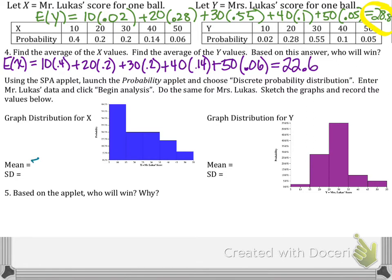So we already calculated the mean to be the expected value of 22.6 for Mr. Lucas' graph. And the standard deviation is going to be calculated either using technology or using a calculator, which we'll go through in class. And the standard deviation for his distribution is 12.777. We also calculated the mean already, but my Staplet applet confirmed that the expected value for Mrs. Lucas was 28.8. And the standard deviation of my scores would be 8.035.